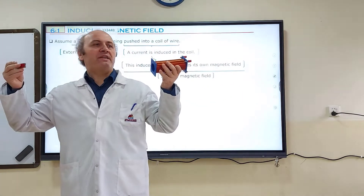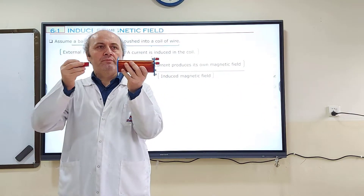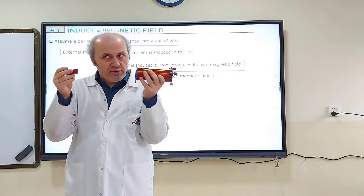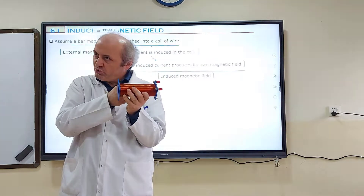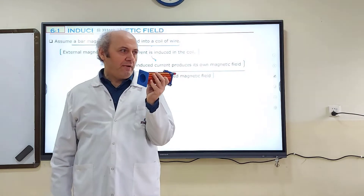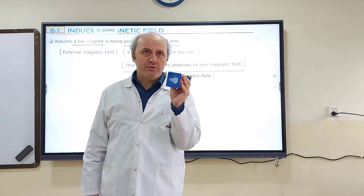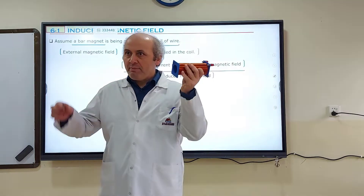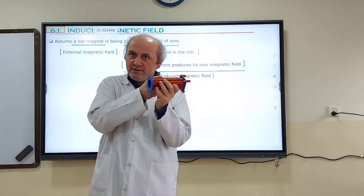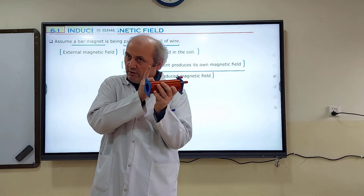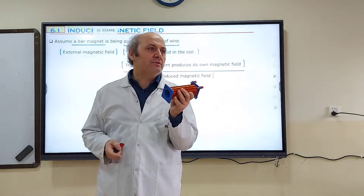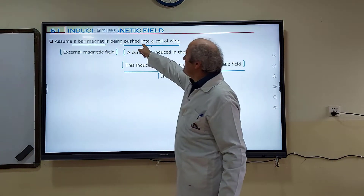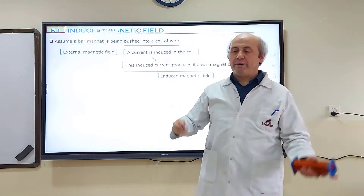What if I make them approach each other? Is there a change of magnetic flux through the coil? Yes. Is there an induced current? Yes. Every current produces its own magnetic field. When I make them closer, because there is an induced current in the coil, this coil produces a magnetic field.